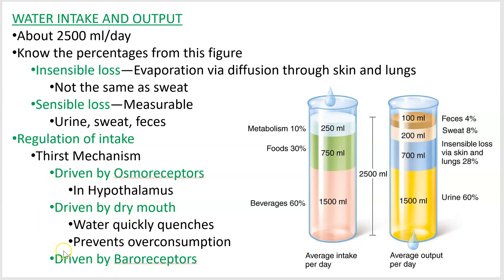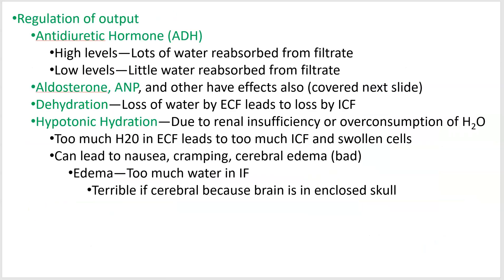Baroreceptors — pressure receptors in your blood vessels — also trigger thirst. If there is not enough blood (i.e., low blood pressure), you need to increase blood volume. You'll vasoconstrict as well, but by drinking water you'll increase that blood volume.